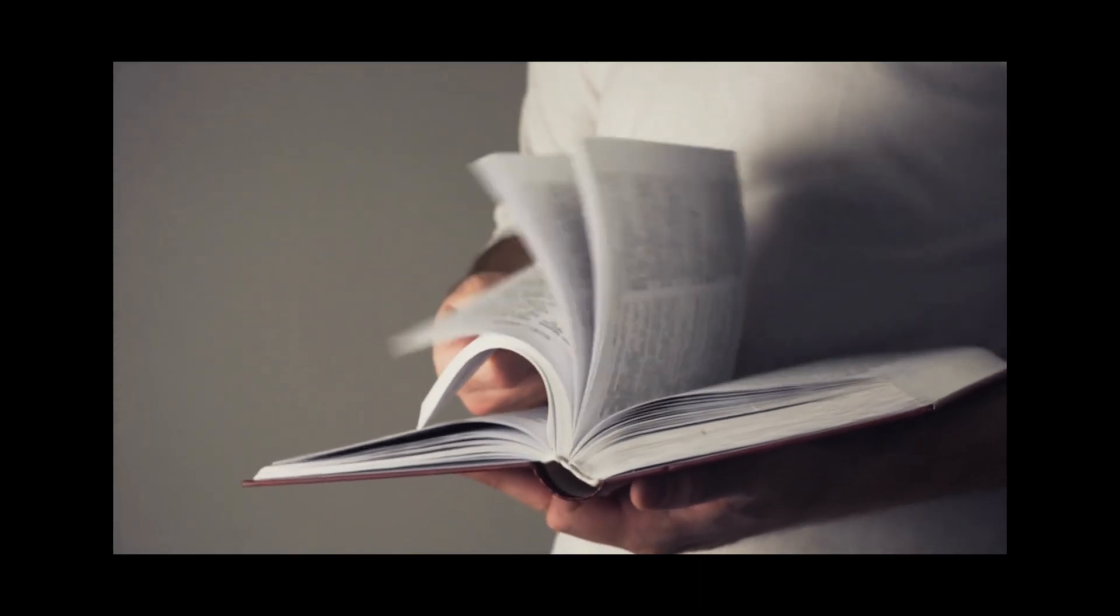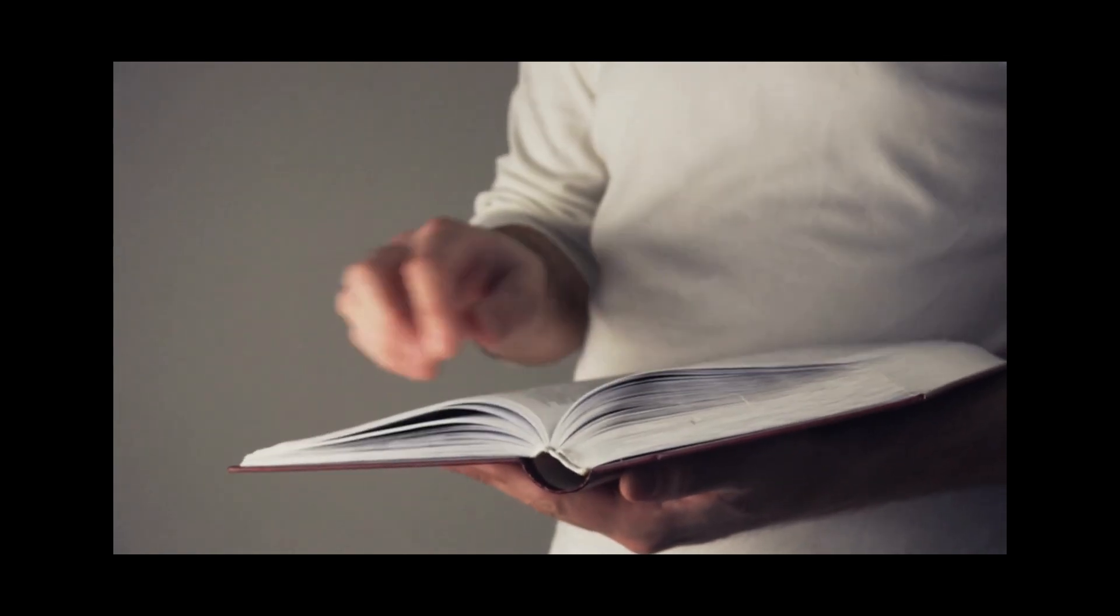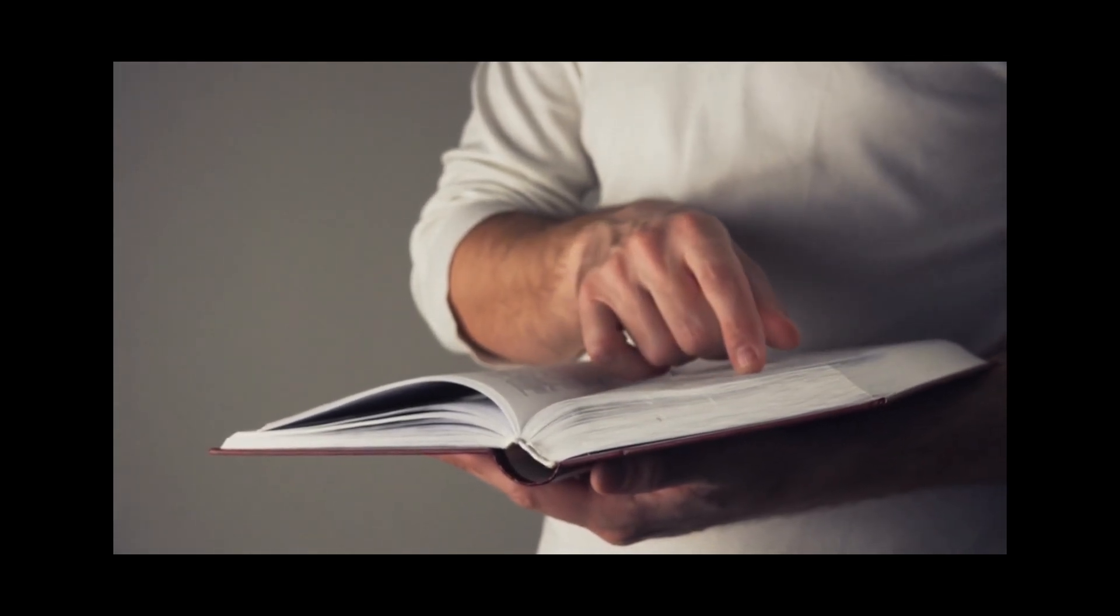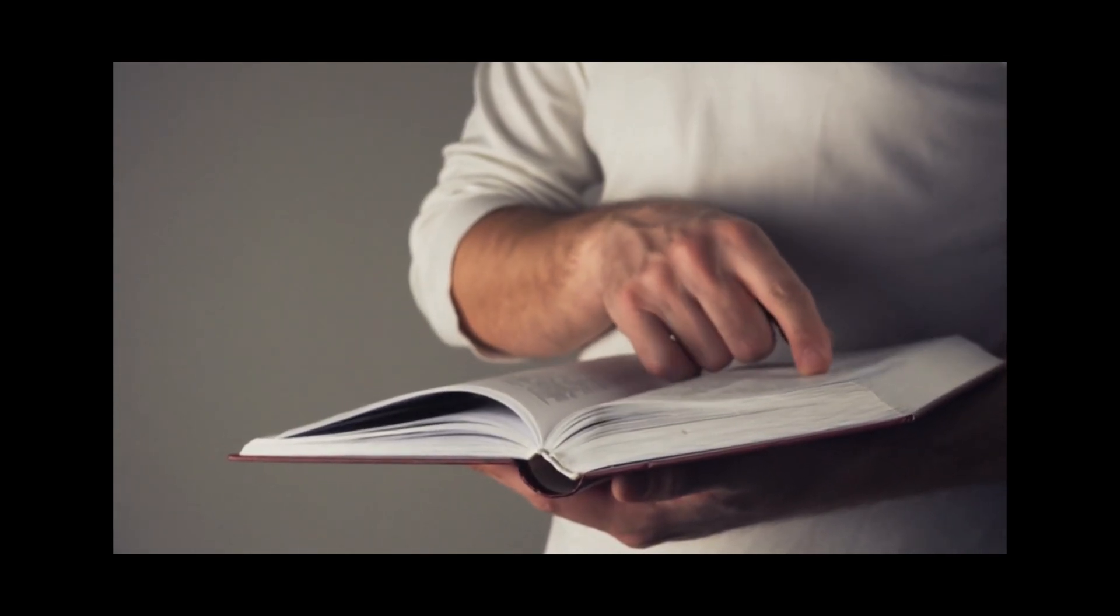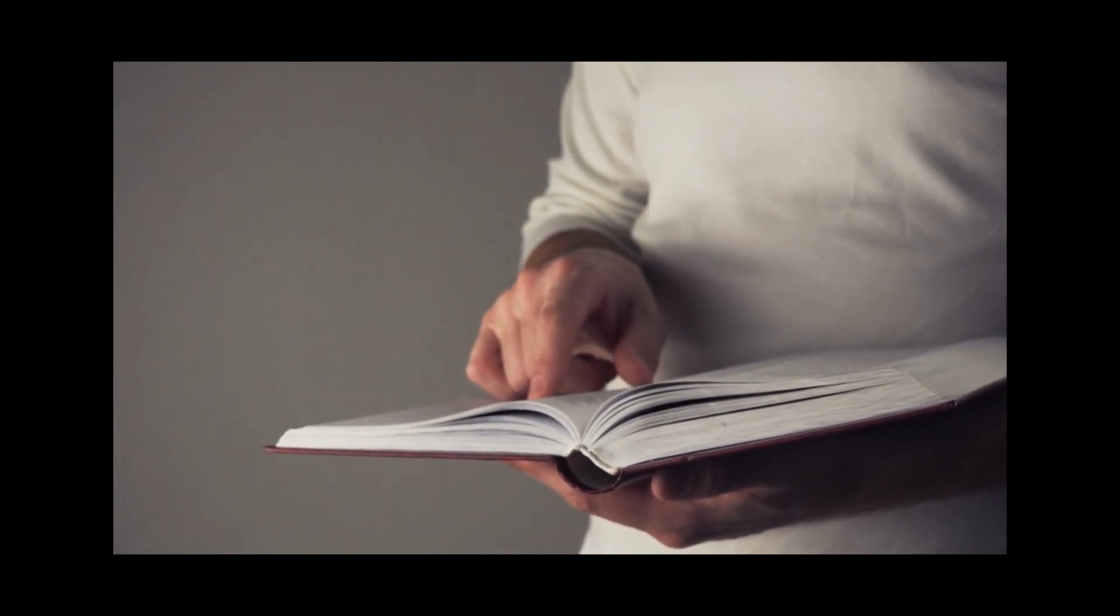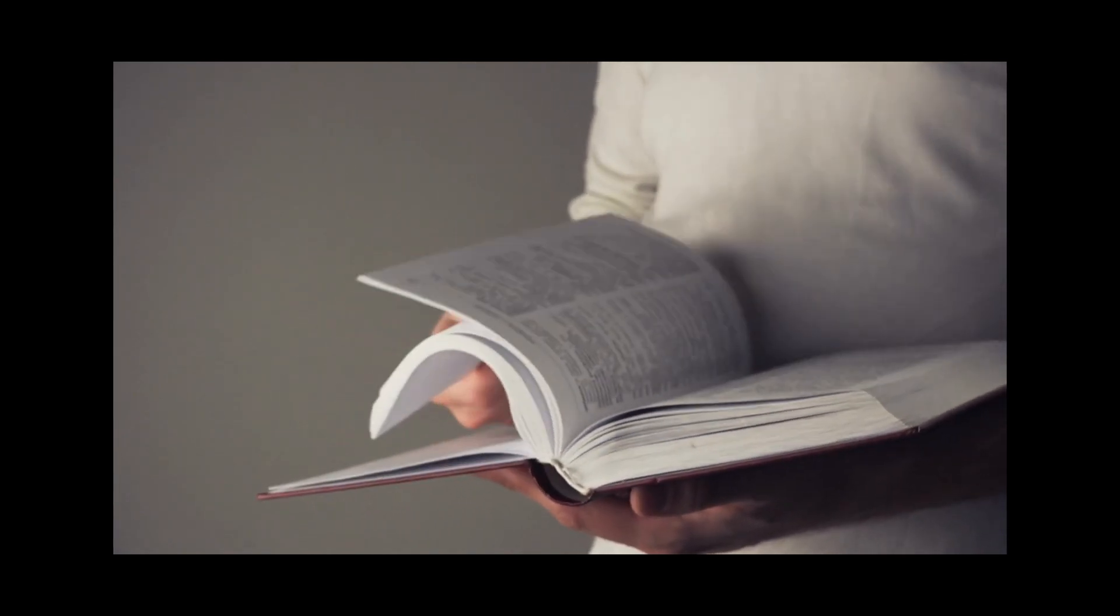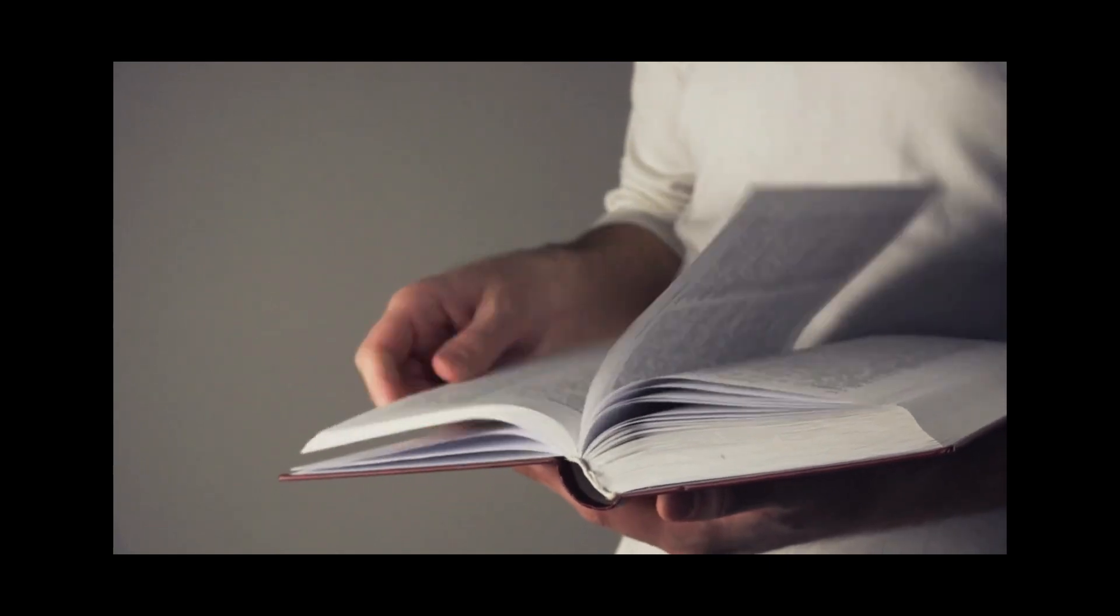One practical application for divide and conquer is the dictionary. We don't go through each and every word alphabetically. Instead we open at some point. If our word is less than the point, we search the left side. If it is more, we move to the right.